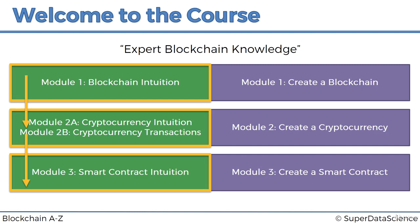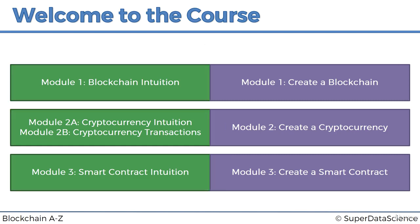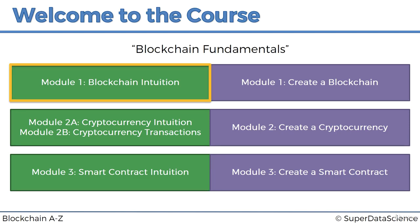Finally, if you don't have that much time or you don't want to dive into the technicalities of cryptocurrencies and smart contracts, you can go down the path of Blockchain Fundamentals — that is simply by taking Module 1: Blockchain Intuition and nothing else. Even if you just complete the first part of this course — the intuition tutorials for Module 1 — you will already be very well equipped to have conversations about blockchain, understand what it is, and explain to others how it works. This covers key components such as decentralization, hash cryptography, and Byzantine fault tolerance, and how they all come together to create this new phenomenon which is blockchain.